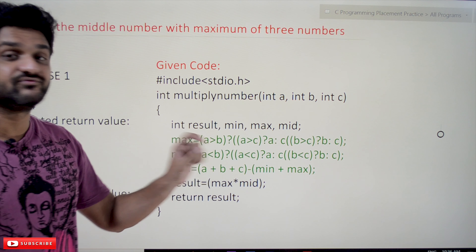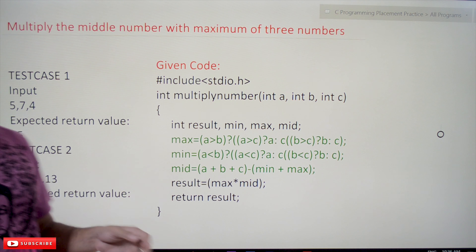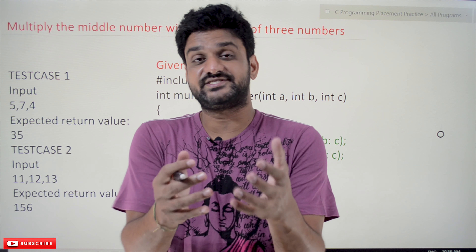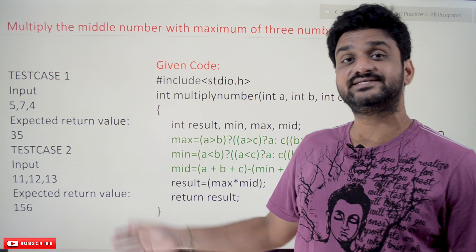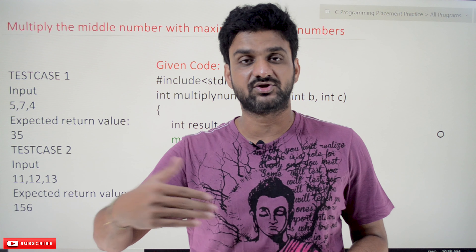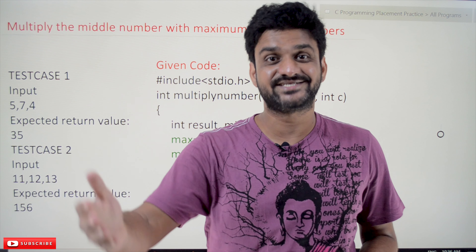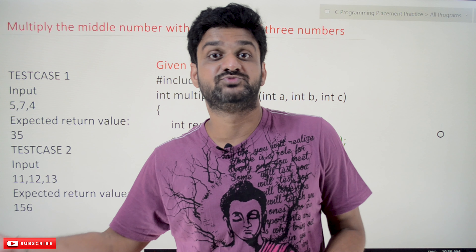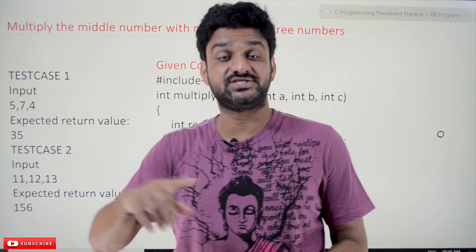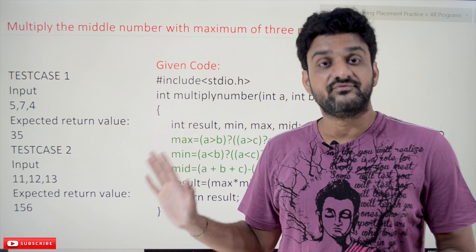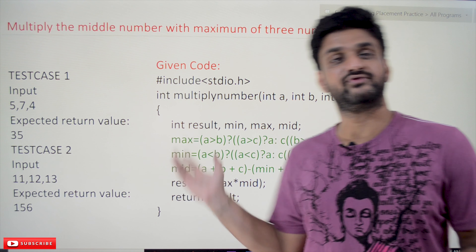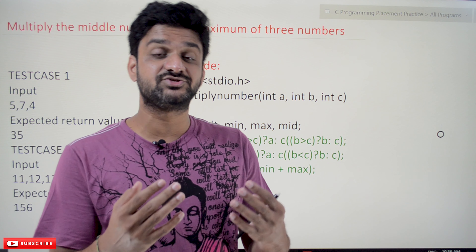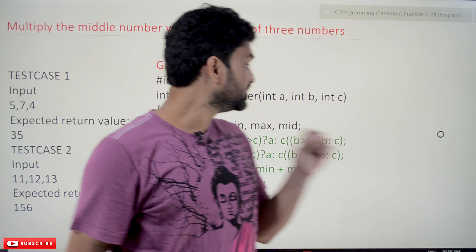We have to identify and correct those errors within that environment, then submit the program. After submitting, it will test your program on multiple test cases. If all those cases pass, you'll get the right output and it states that you have successfully completed the program. The code is provided — we have to correct it and submit it to the compiler, which handles all the testing.